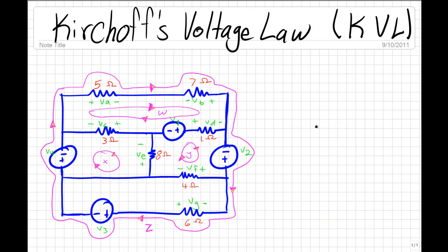According to Kirchhoff's Voltage Law, the sum of the voltages around a path is going to be equal to 0. For this example, we're going to let a positive sign equal the voltage drop. So for path W,